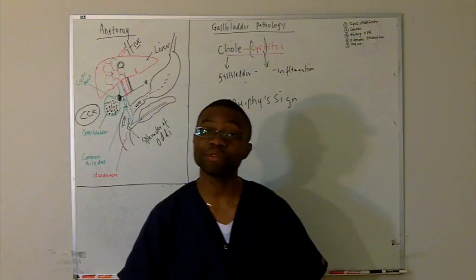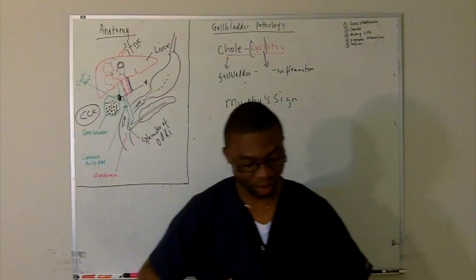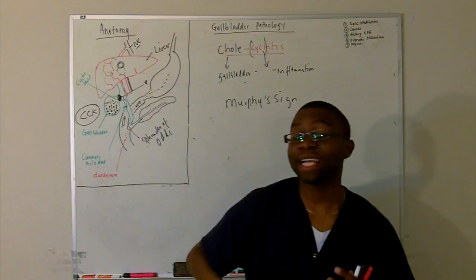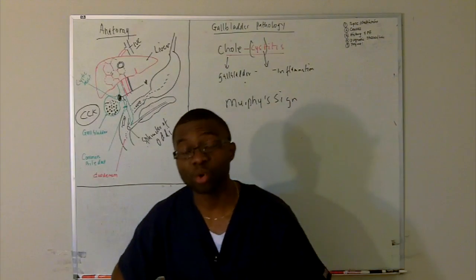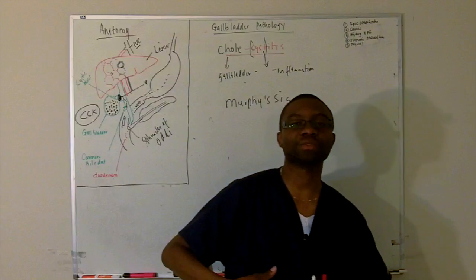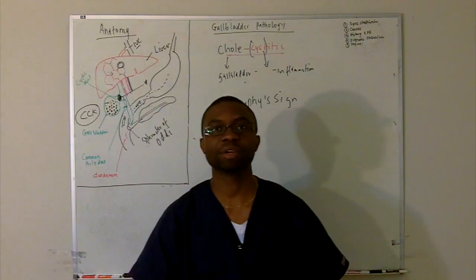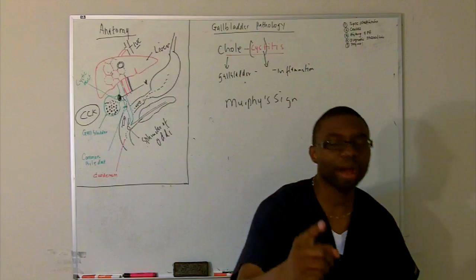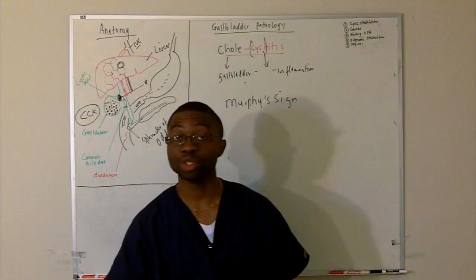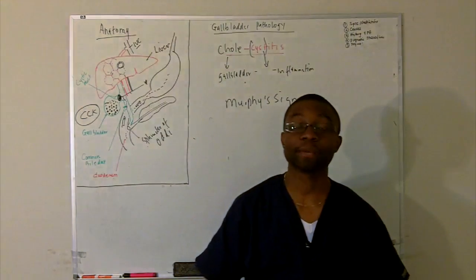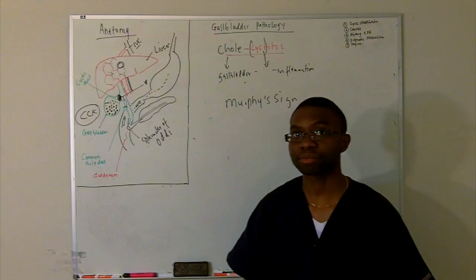Most cases, you might not find it. And it still comes in the right upper quadrant pain. However, an inspiratory arrest during a deep palpation of the right upper quadrant, positive Murphy's sign. If you find that, bam, you just nailed the diagnosis. You know for sure it's probably something wrong with their gallbladder.